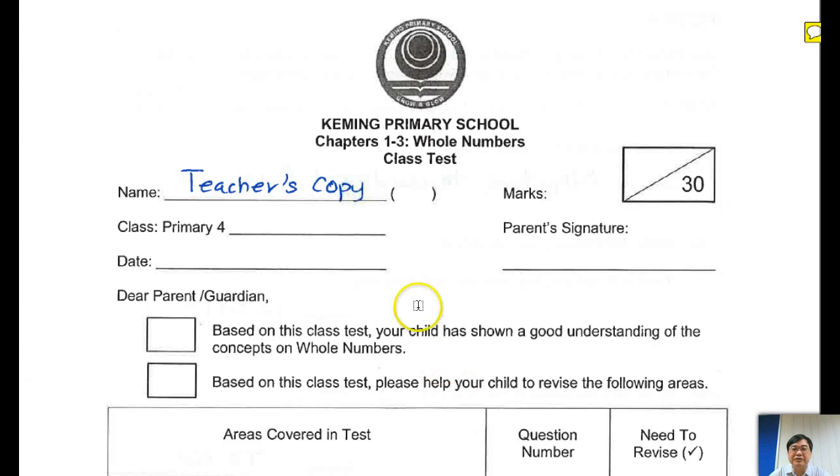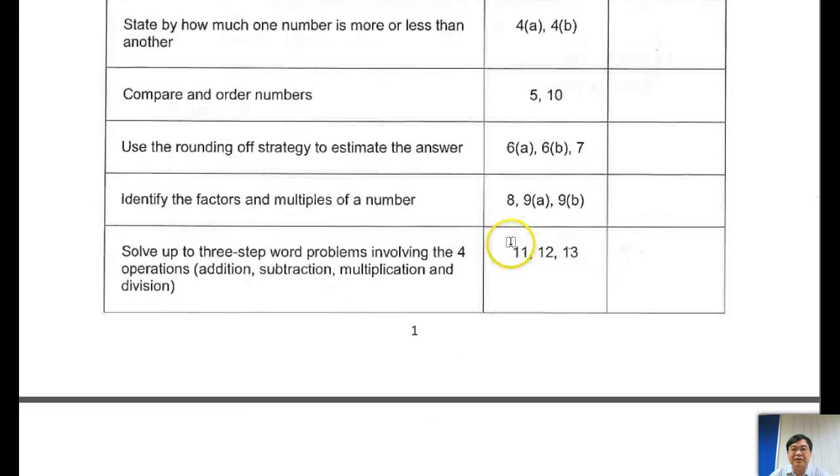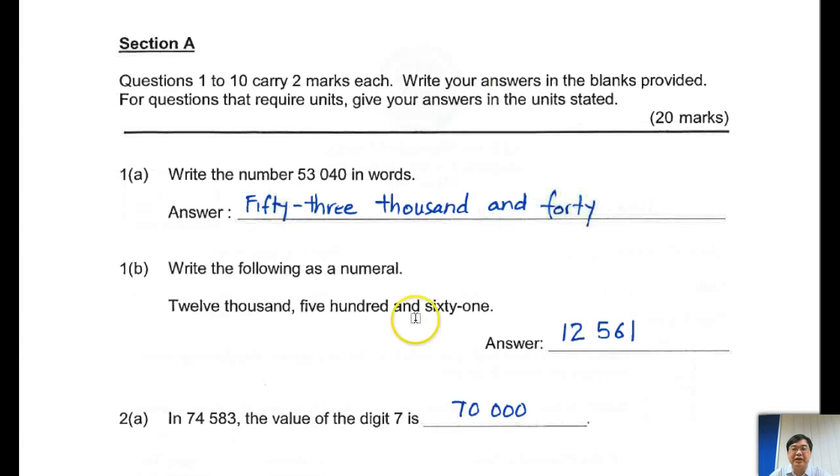Alright guys, we're going to do corrections for this part here. I'll just scroll up. Start with the first one, section A. Now this is quite easy, you can see here.